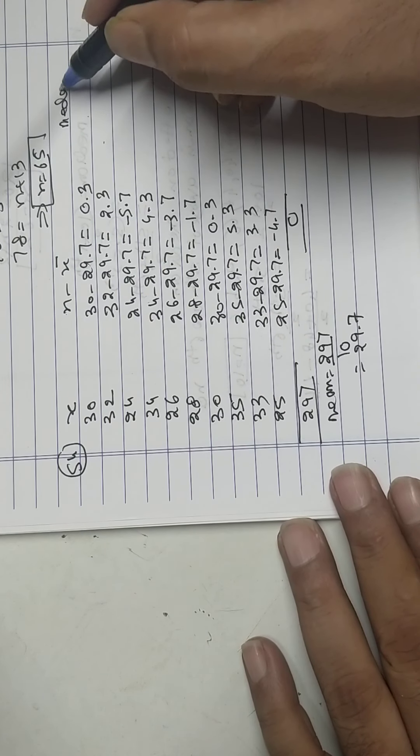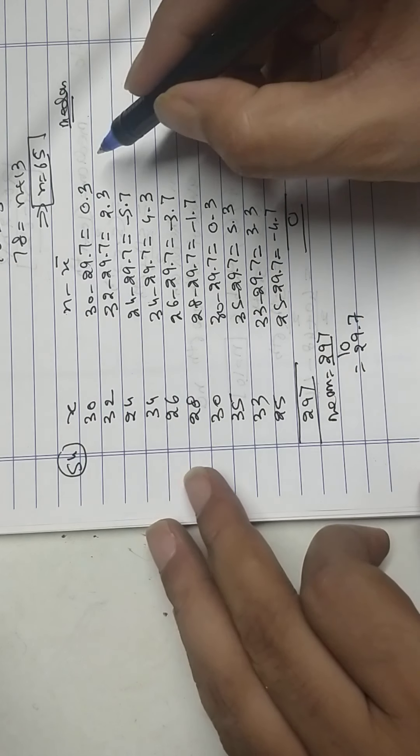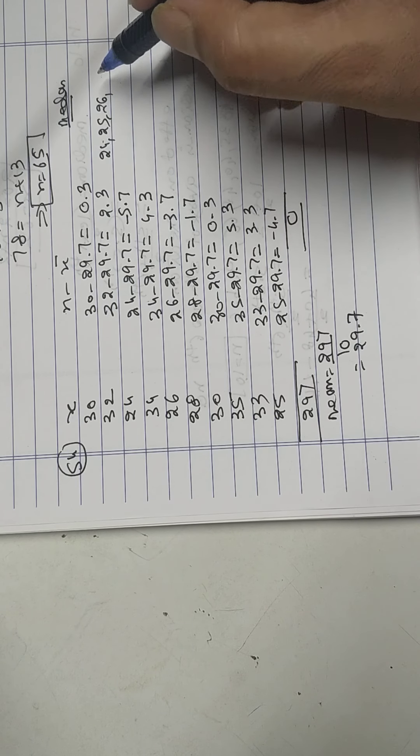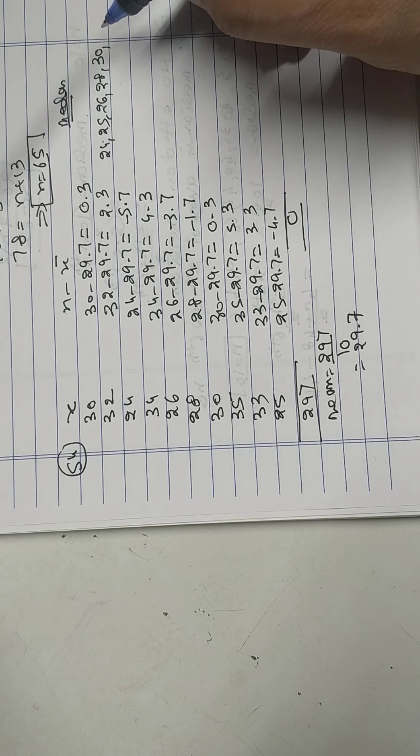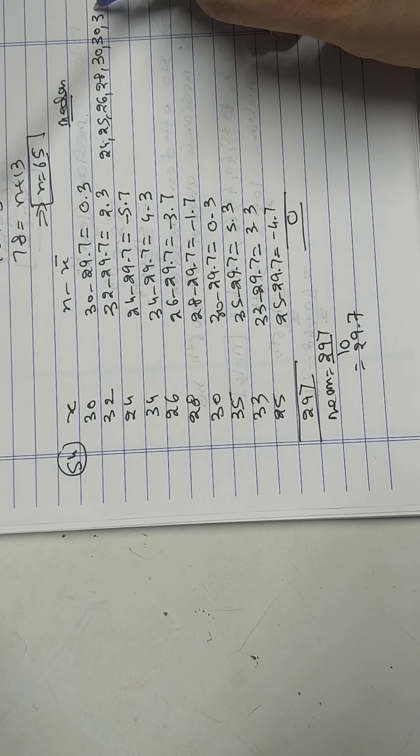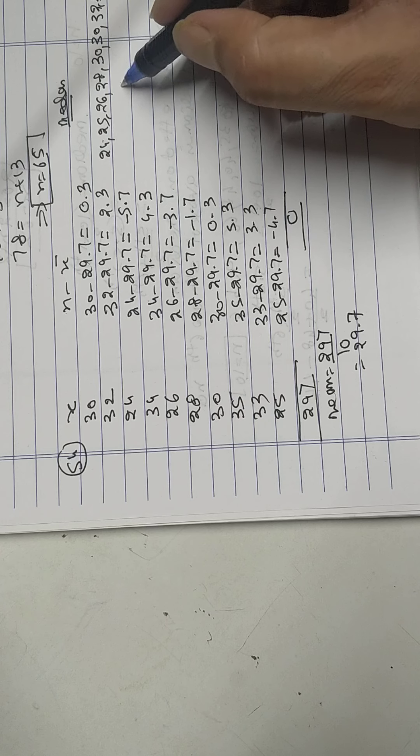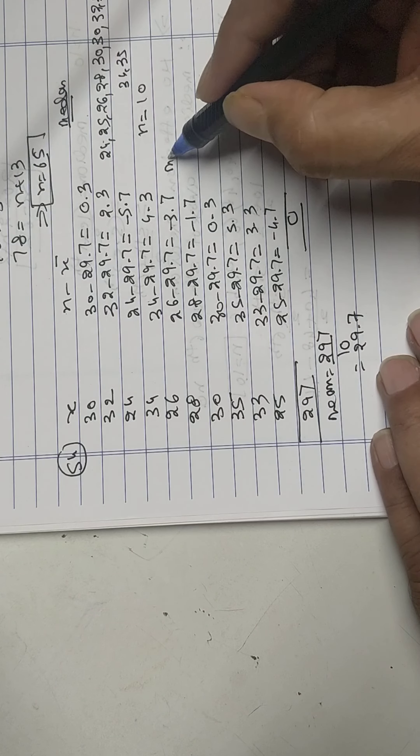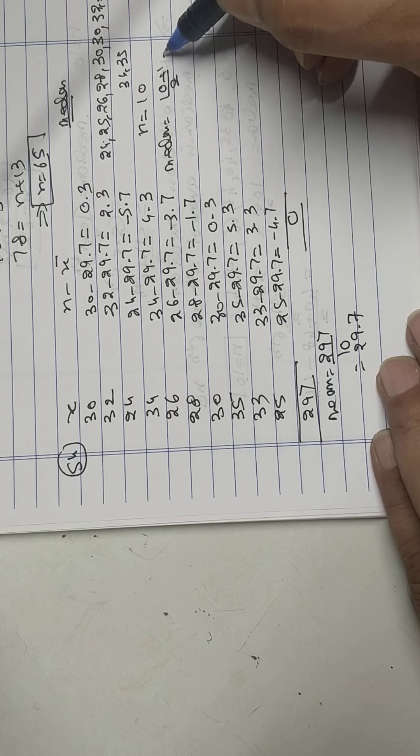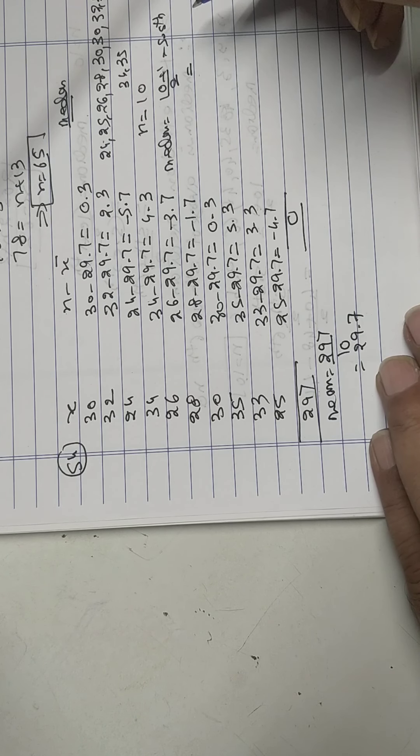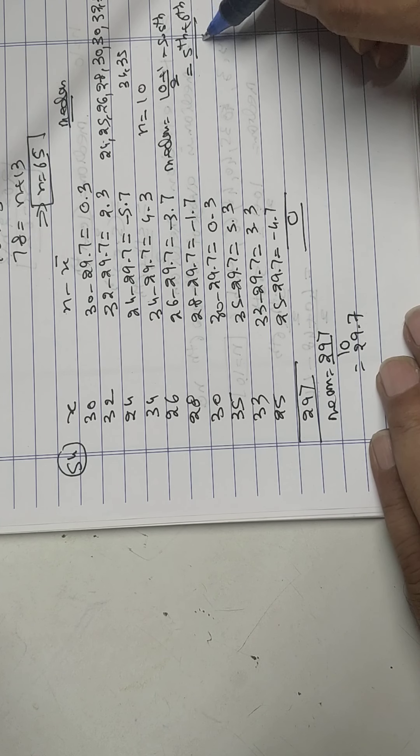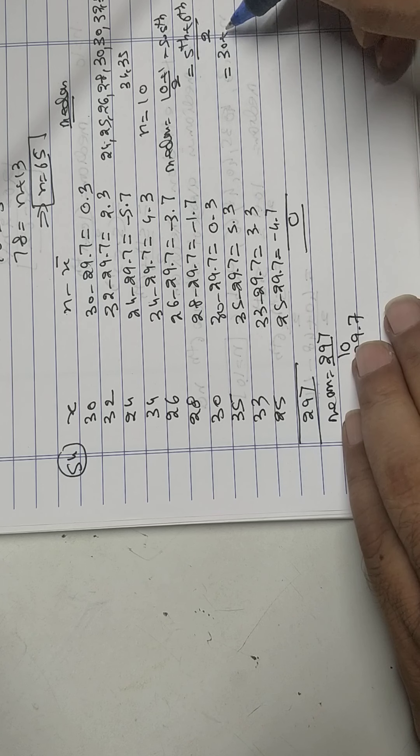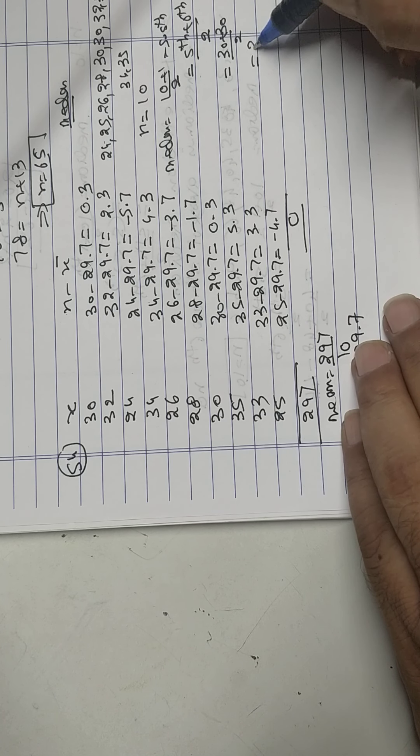I want to find median. Arrange values: 24, 25, 26, 28, 30, 30, 32, 33, 34, 35. N is 10, so median is 10 plus 1 upon 2, 5.5. And 5.5th term is average of 5th and 6th divided by 2. 5th is 30, 6th is 30 divided by 2. My answer is 30.